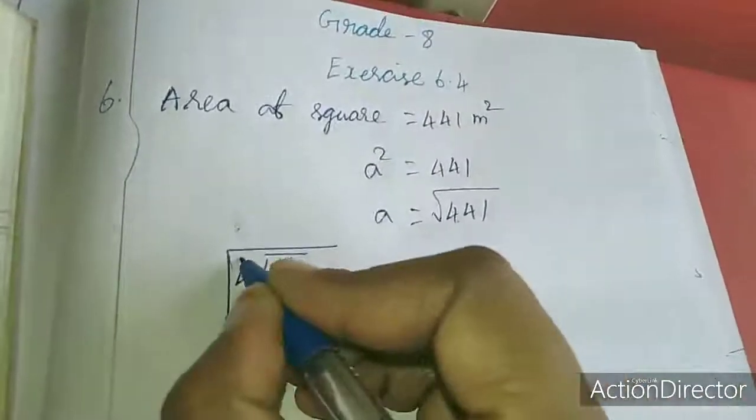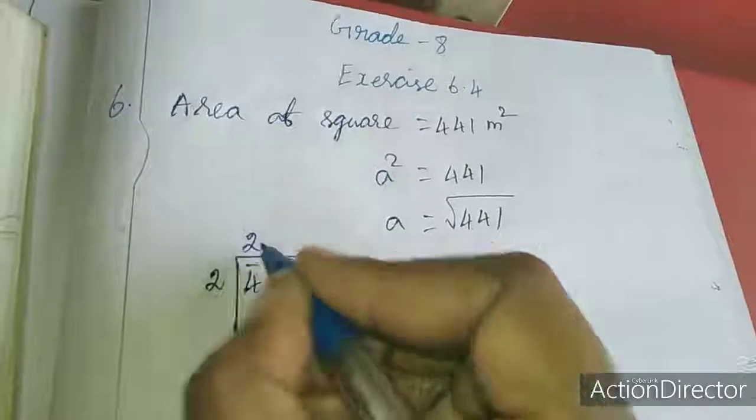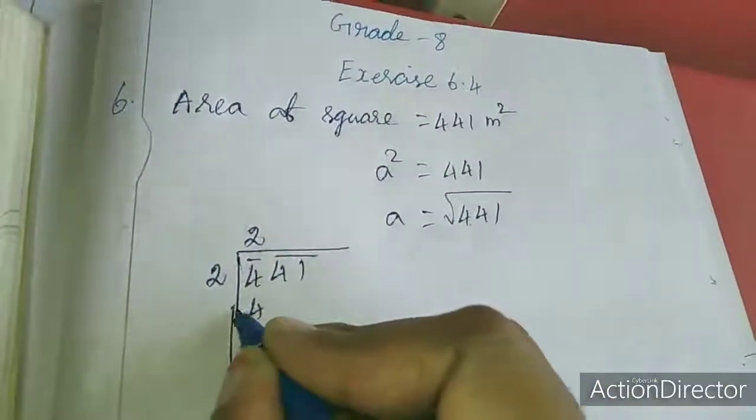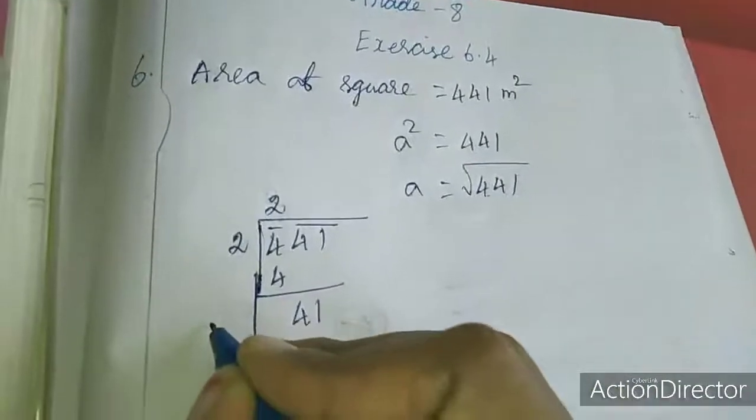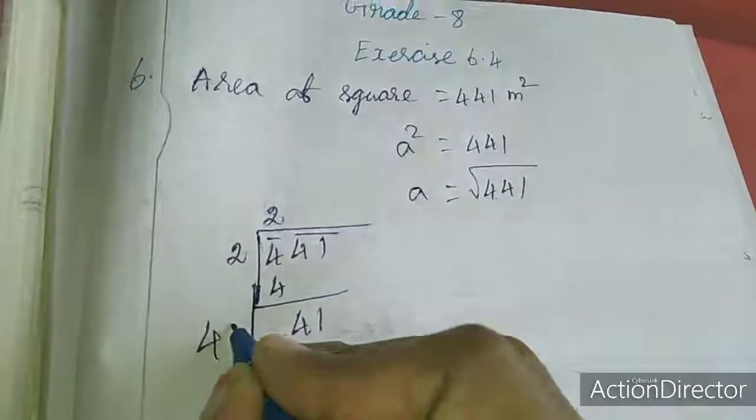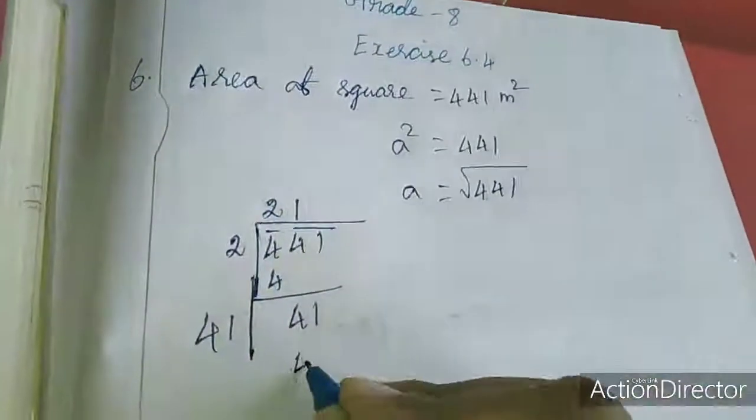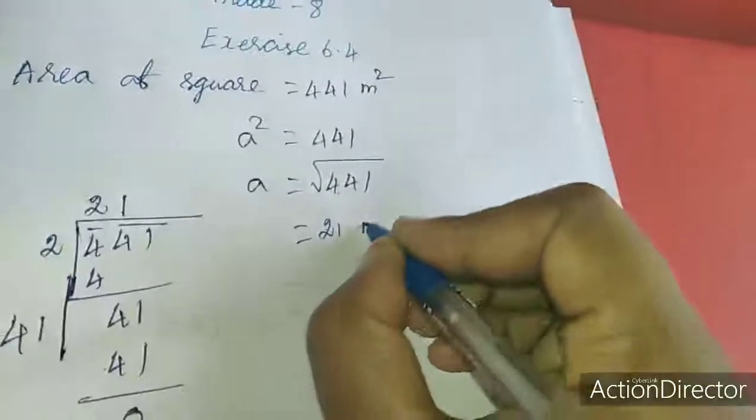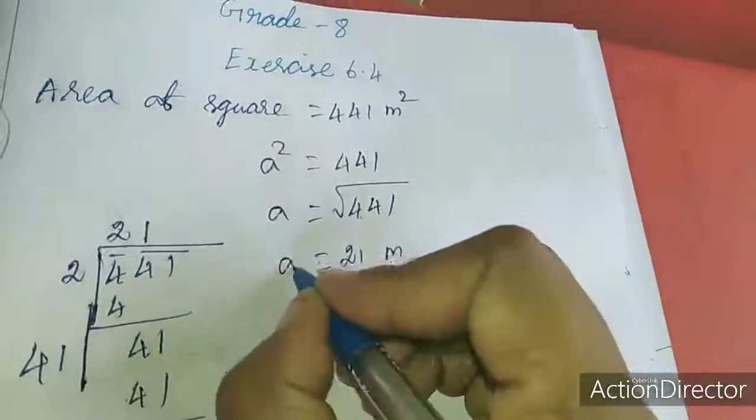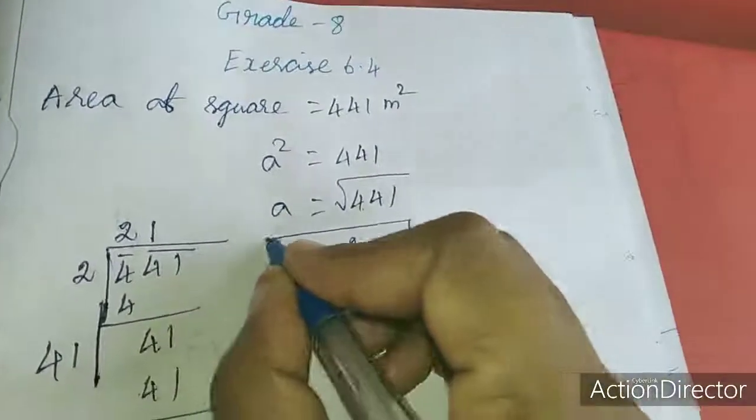441, 2 I am considering. 2, 2, 4. Again 41 will come. 2 is 4, here 1 I am keeping. 1 I am keeping means 41 will come. So the value is 21 meter. This is the value for 6th sum.